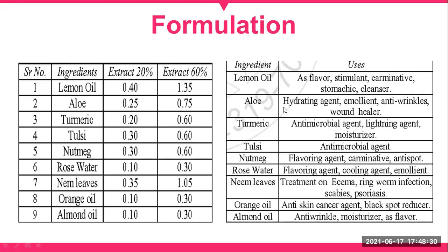Aloe acts as a hydrating agent, emollient, and wound healer. Turmeric is a well-known antimicrobial agent, has lightening property, and can also be used as a moisturizer. Tulsi can be used as an antimicrobial agent. Nutmeg can be used as a flavoring agent, carminative, and anti-spot agent. Rose water is generally used as a flavoring agent, cooling agent, or emollient. Neem leaves can be used for eczema, ringworm infections, and psoriasis. Orange oil is an anti-skin cancer agent and black spot reducer. Almond oil has anti-wrinkle property and can also be used as a moisturizer or primer.